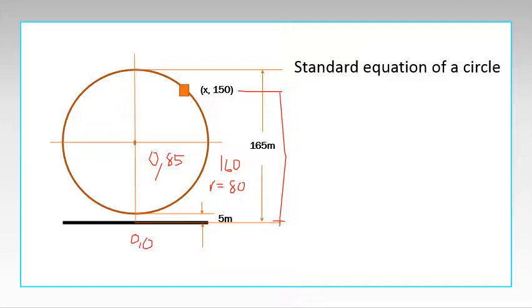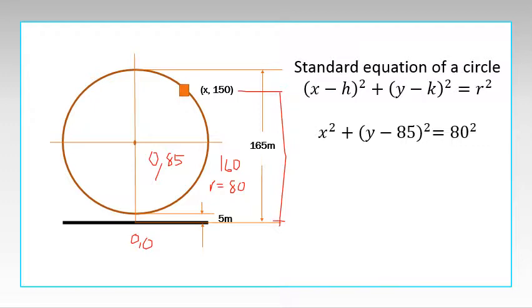Let us use the standard equation of the circle to solve the given situation. The standard equation of a circle is (x - h)² + (y - k)² = r². Using the given in the problem, we will arrive at an equation: x² + (y - 85)² = 80².